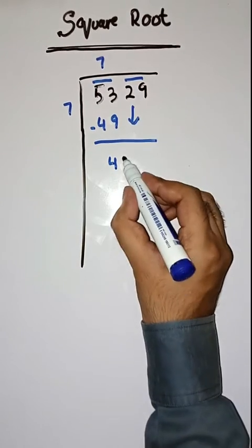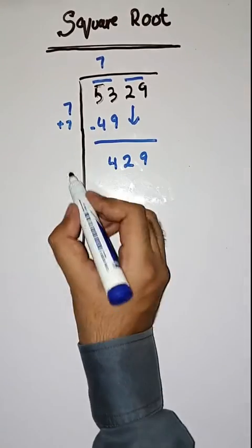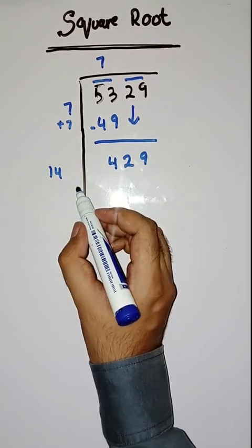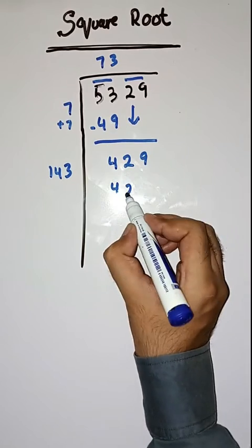Next pair is 29. We will take this down. Here we will do 7 plus 7 which is equal to 14. Now, we will take a number 3. 143 times 3 is 429.